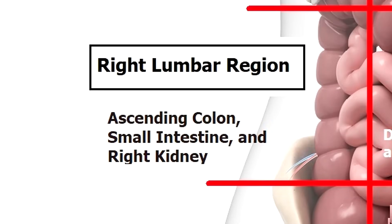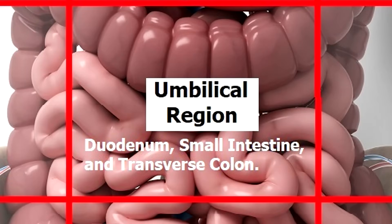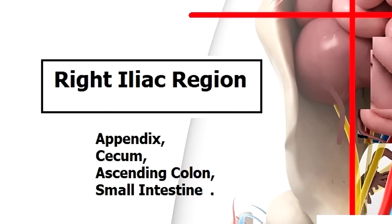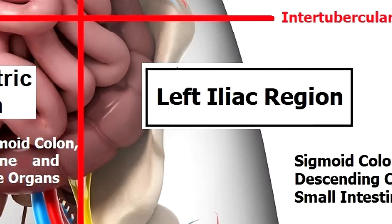In the right lumbar region, you'll find portions of the ascending colon, small intestine, and the right kidney. In the umbilical region, you'll find the duodenum, the small intestine, and the transverse colon. In the left lumbar region, you'll find parts of the descending colon, the small intestine, and the left kidney. In the right iliac region, you'll find the appendix, the cecum, the ascending colon, and the small intestine. In the hypogastric region, you'll find the bladder, portions of the sigmoid colon, the small intestine, and reproductive organs. And in the left iliac region, you'll find parts of the sigmoid colon, the descending colon, and the small intestine.